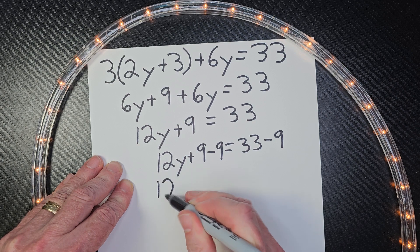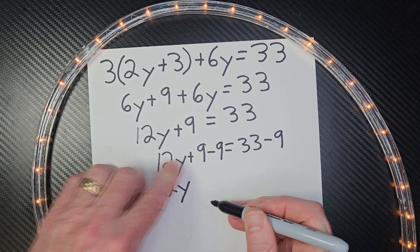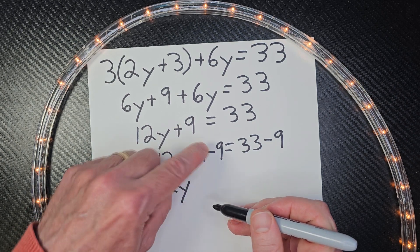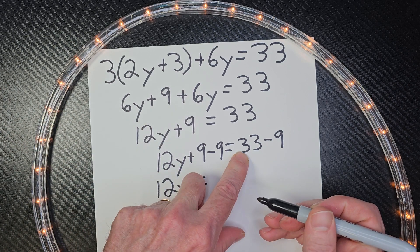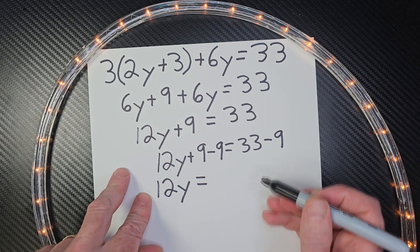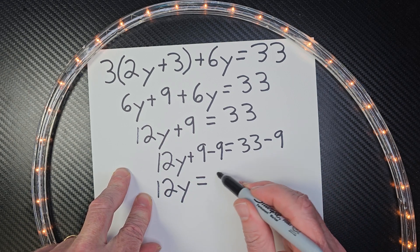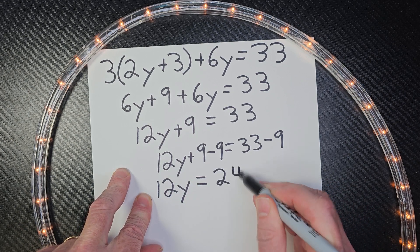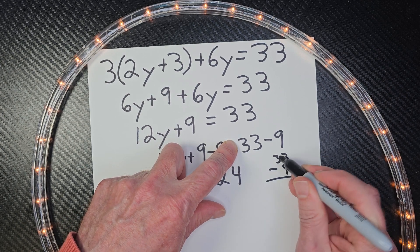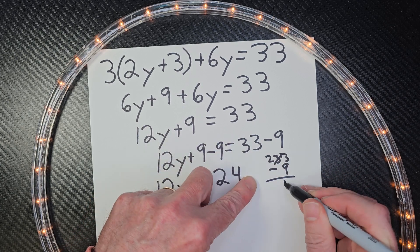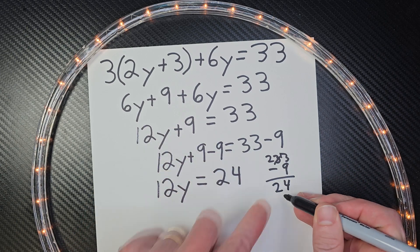So let's go ahead and do our subtraction. So I'm going to have 12Y. 9 minus 9 is 0, and we don't have to put 0 there, just leave it alone. And then equals, and then 33 minus 9, the answer would be 24. So 24. If you're not sure how to do that, just go 33 minus 9, and then borrow 2 from here, and then that would be 4, and drop the 2 down. So that's 24.